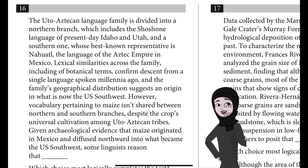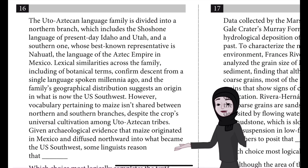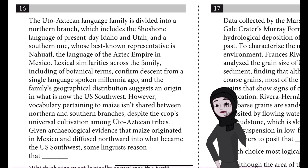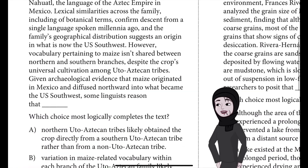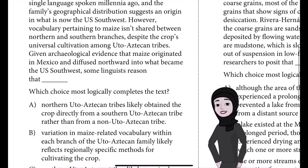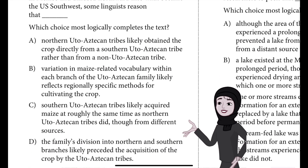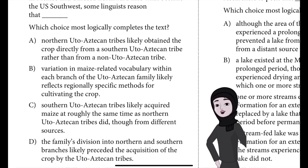However, vocabulary pertaining to maize isn't shared between northern and southern branches, despite the crop's universal cultivation among Uto-Aztecan tribes. Given archaeological evidence that maize originated in Mexico and diffused northward into what became the U.S. Southwest, some linguists reason that blank.